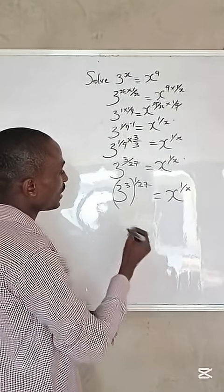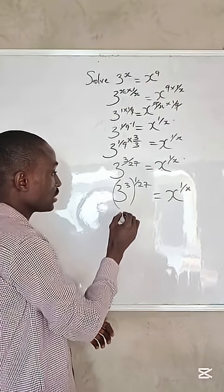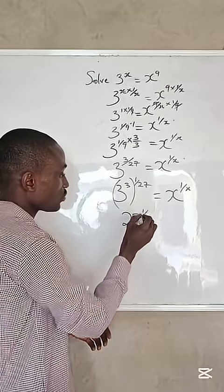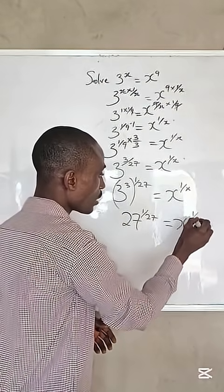From here, we can conclude that 3 raised to the power of 3 is 27, so we have 27 raised to the power of 1 over 27 equals x raised to the power of 1 over x.